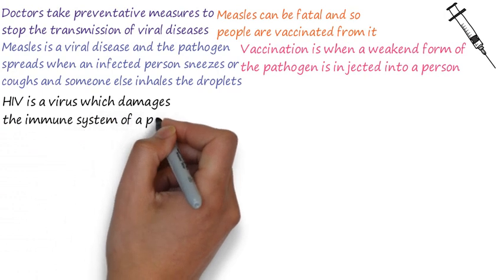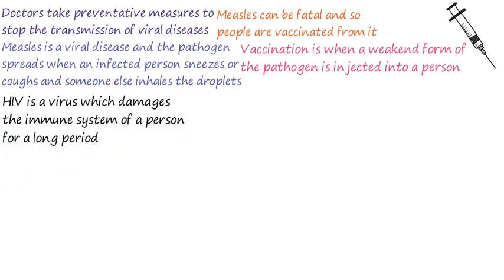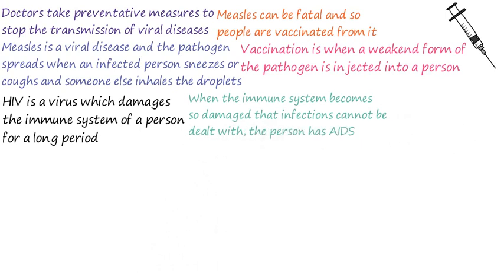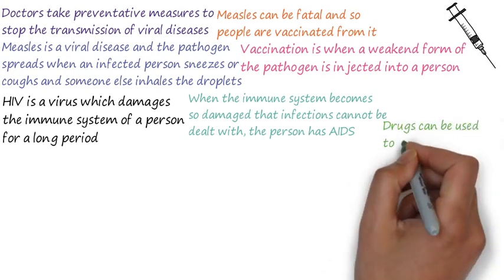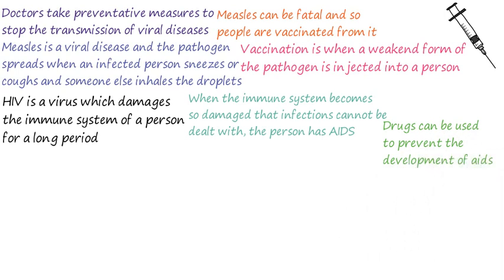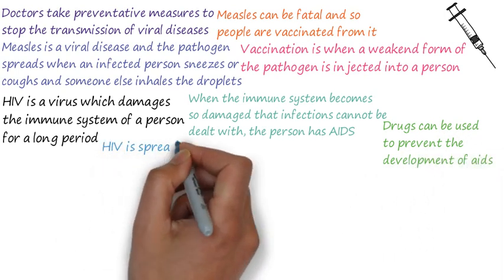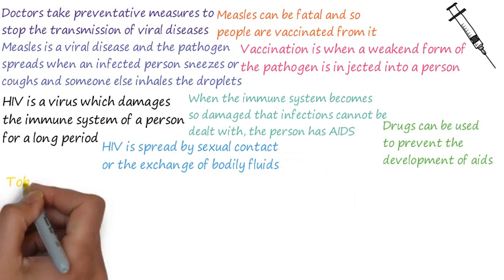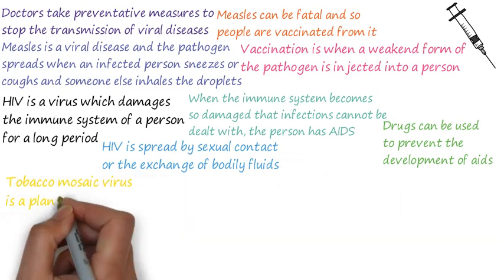HIV is a virus which causes flu-like symptoms. The virus damages the immune system over a long period, and eventually the immune system becomes severely damaged. When the immune system is so damaged that infections cannot be dealt with, the person has AIDS — so HIV leads to AIDS. Certain drugs can be used to prevent the development of AIDS, but if these are not used the infection can lead to death. HIV is spread by sexual contact or the exchange of bodily fluids.